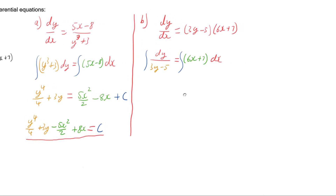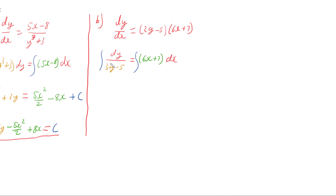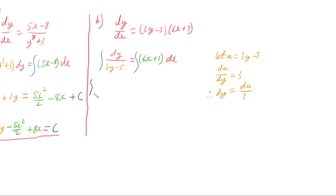Integrating the right side is easier than the left. For the left side, I'll do a substitution: let u equal 3y minus 5, so du/dy equals 3, which means dy changes to du over 3. Substituting in gives the integral of (1/u) times (du/3).